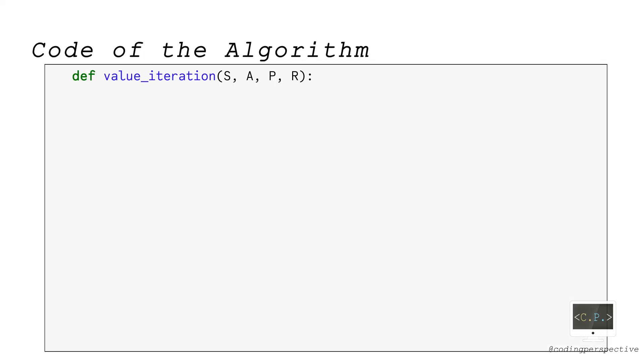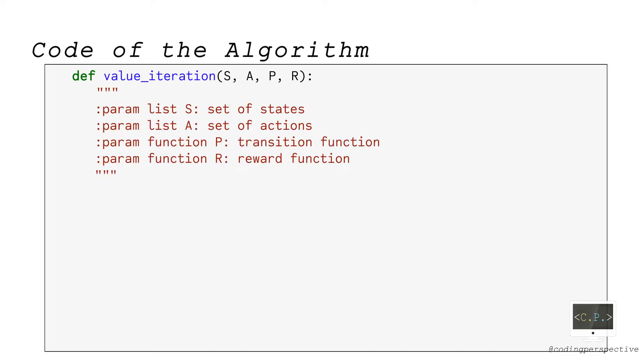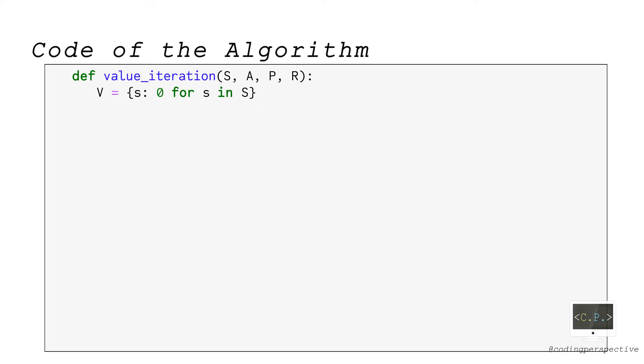Now, let's code this algorithm in Python by writing a function called value_iteration. The input of this function is the set of states S as a list, the set of actions A as a list, the transition function P as a function, and lastly reward function as a function. I will later talk about how to define these inputs for a specific example. We first set the value functions for each state S to 0. Here, I initialize the value function V as a dictionary instead of a list or an array just to keep track of the state as a key.